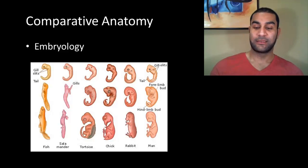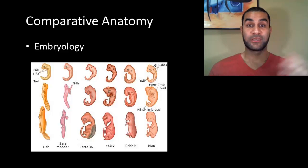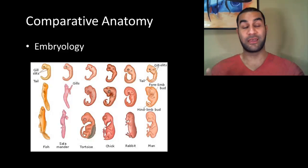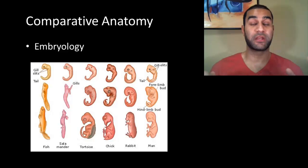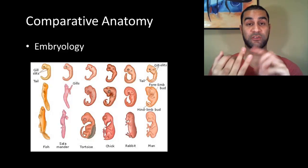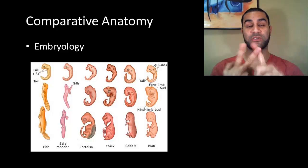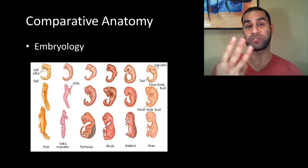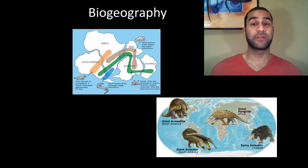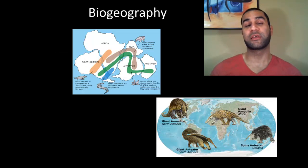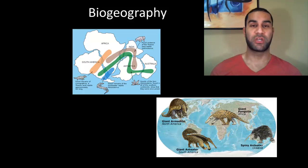That's the bridge connecting embryology to evolutionary theory. So that represents comparative anatomy — make sure you're comfortable with all three parts: homologous structures, vestigial structures, and embryology. The final category of different sources of evidence supporting evolutionary theory is biogeography.